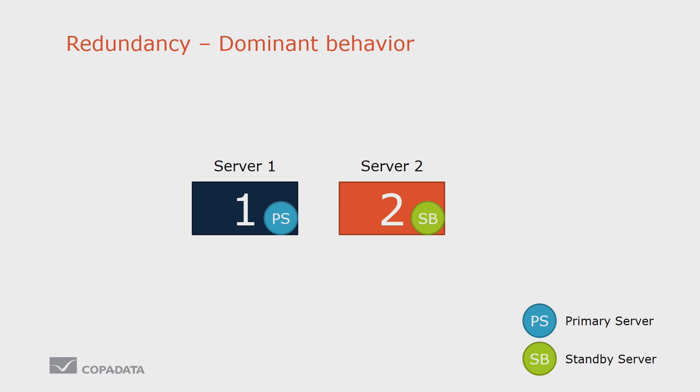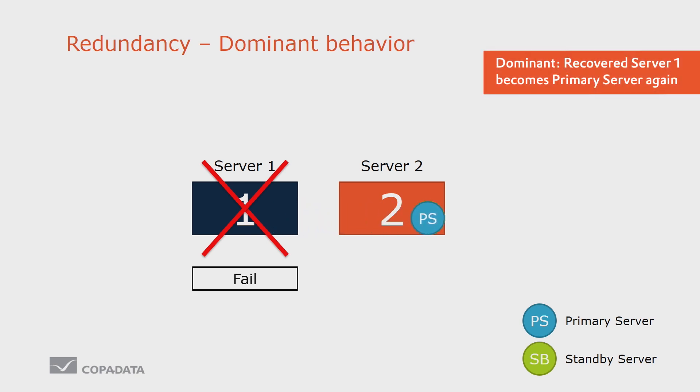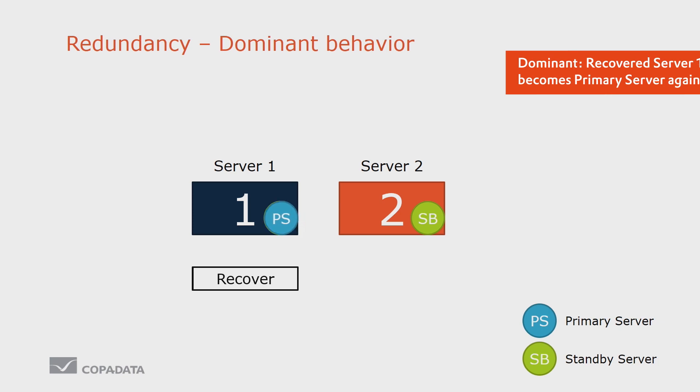The first mode, or we call it dominant behavior, was already introduced a long time before. We have a primary server and a standby server. If the primary server fails, the standby server will take over the role of the primary server and will do all the archiving, all the communication to the driver. The clients are switched automatically to the new domain — so for the client it's really transparent. This behavior was in Xenon for a long time, but it does not really fit all applications.